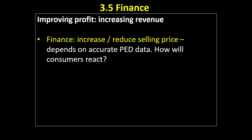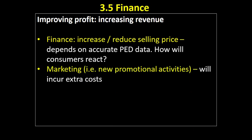In terms of increasing revenue, the finance department could look at increasing or reducing the selling price. Can we increase our price and have people keep buying our product, or do we cut our price and hope that more people buy it — so although we make less per unit we sell a greater quantity and therefore make more money? Whether that's effective will depend on accurate price elasticity of demand data. If we have an inelastic product and we raise the price, that should help increase revenue as long as costs don't increase too much. But if we think we have an inelastic product, raise our price, and consumers experience more elastic demand than we thought, that would be a problem. So reducing or raising your selling price depends on how accurate the price elasticity of demand data is.